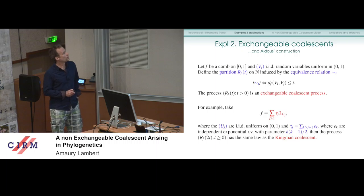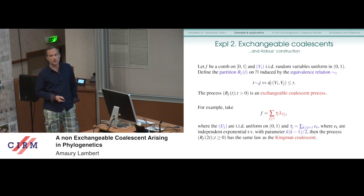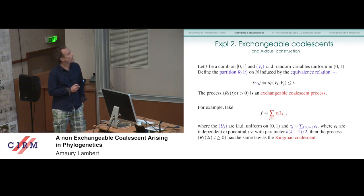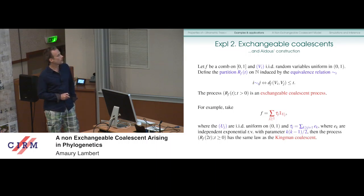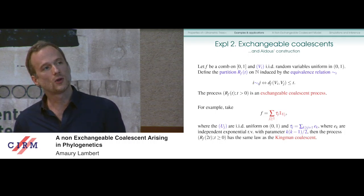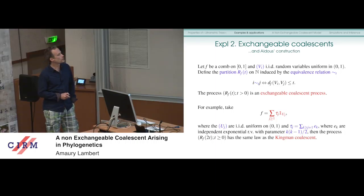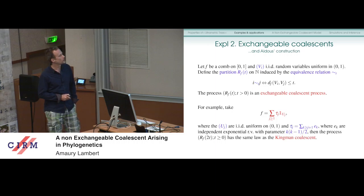There is a well-known construction of exchangeable coalescence by this means: Aldous's construction of the Kingman coalescence. Here f is a random comb defined as the sum of a_j × δ_{u_j}, where the u_j's are IID uniforms on [0,1] independent from the V_i's. The τ_j's are the coalescence times in the Kingman coalescence — the sum of e_k's, where the e_k are independent exponential random variables with parameter k(k-1)/2. The process accelerated by a factor 2 has exactly the same law as the Kingman coalescence.